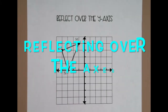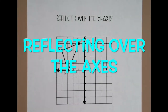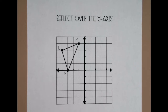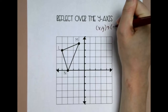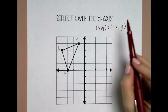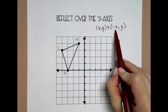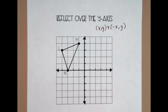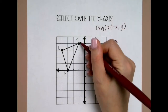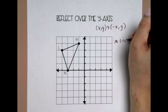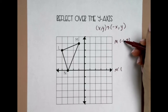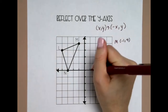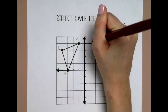So let's get started. When you're reflecting over the x-axis or the y-axis, there are two different methods that you can use. The first one is to use the coordinate rule, and the coordinate rule for the y-axis is negative x, y, which means you change the sign of the x value and you leave the y value the same. So I'm going to show you that with one point. So M is at negative 1, 4, that means M prime will be at positive 1, 4.